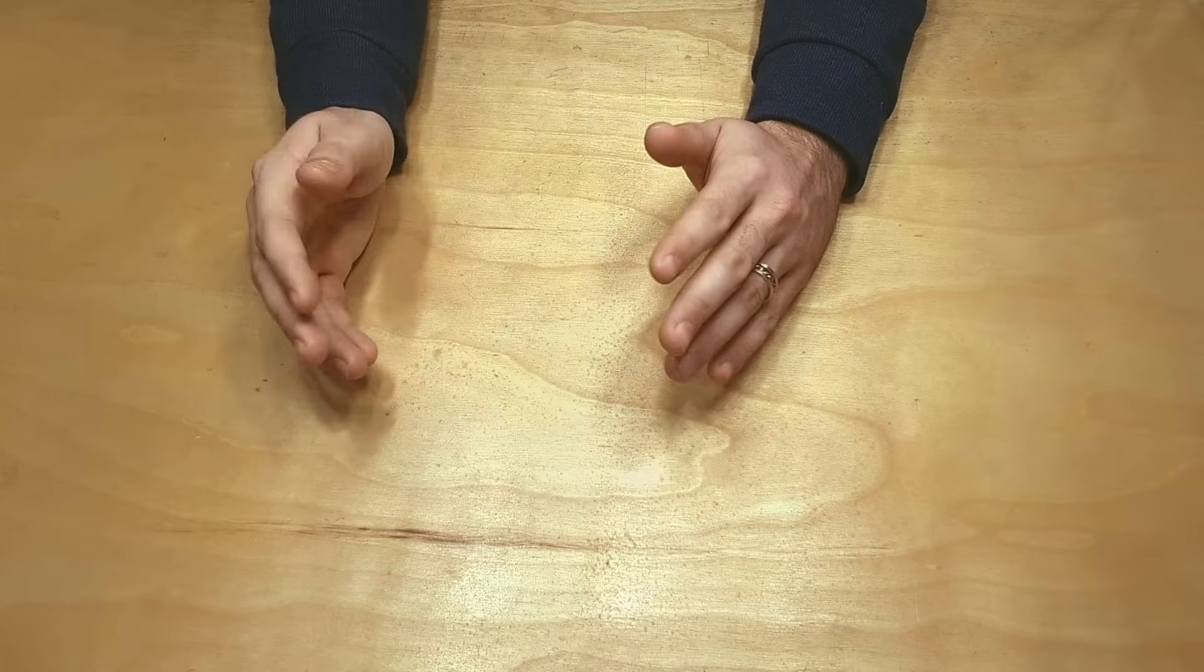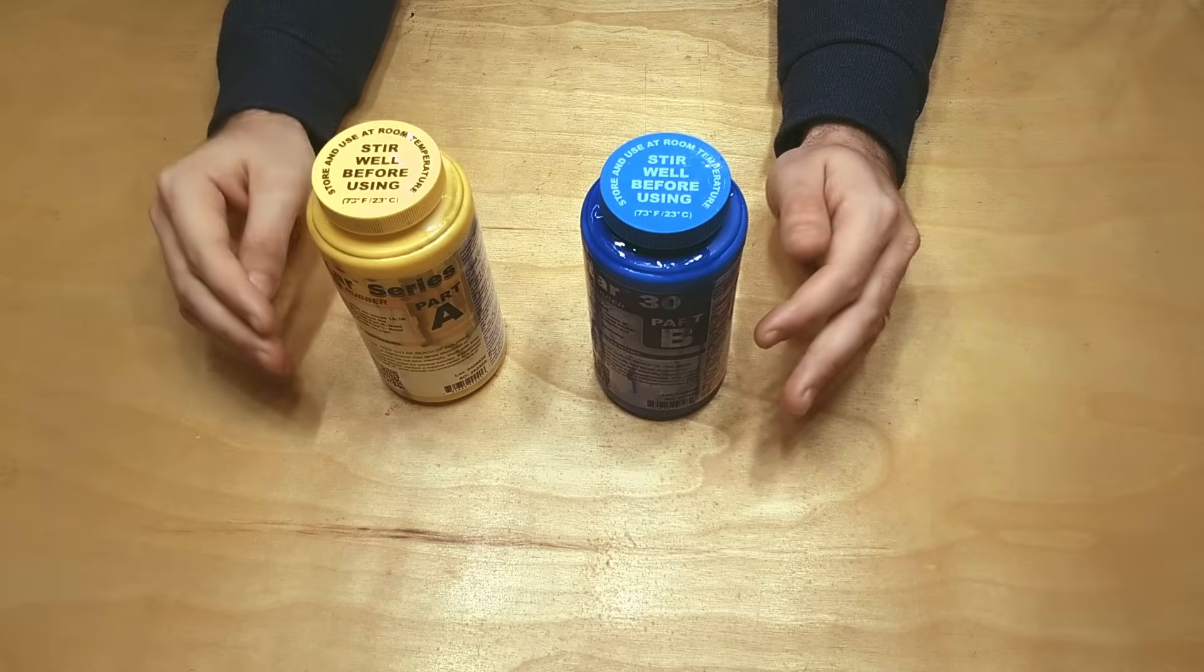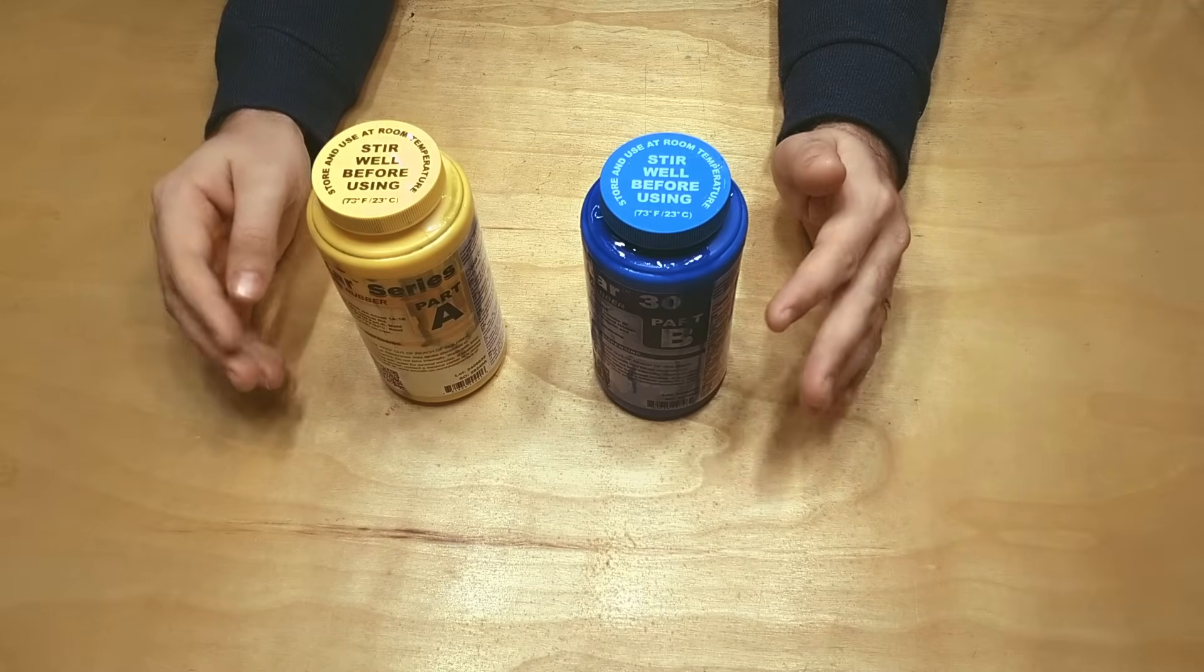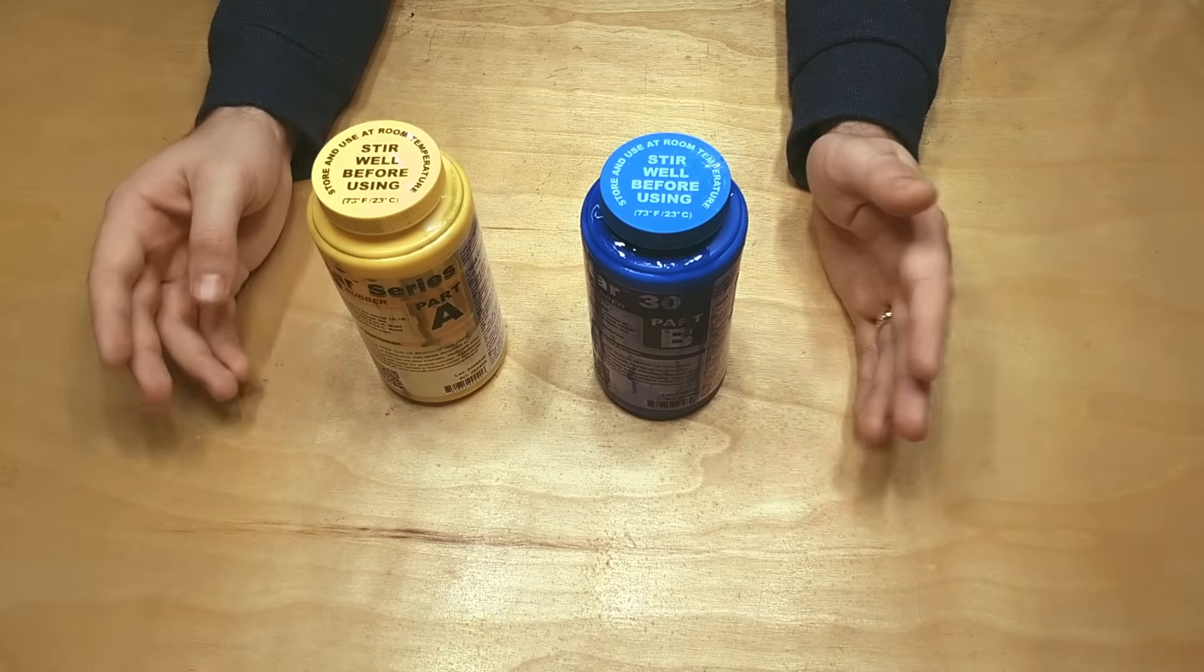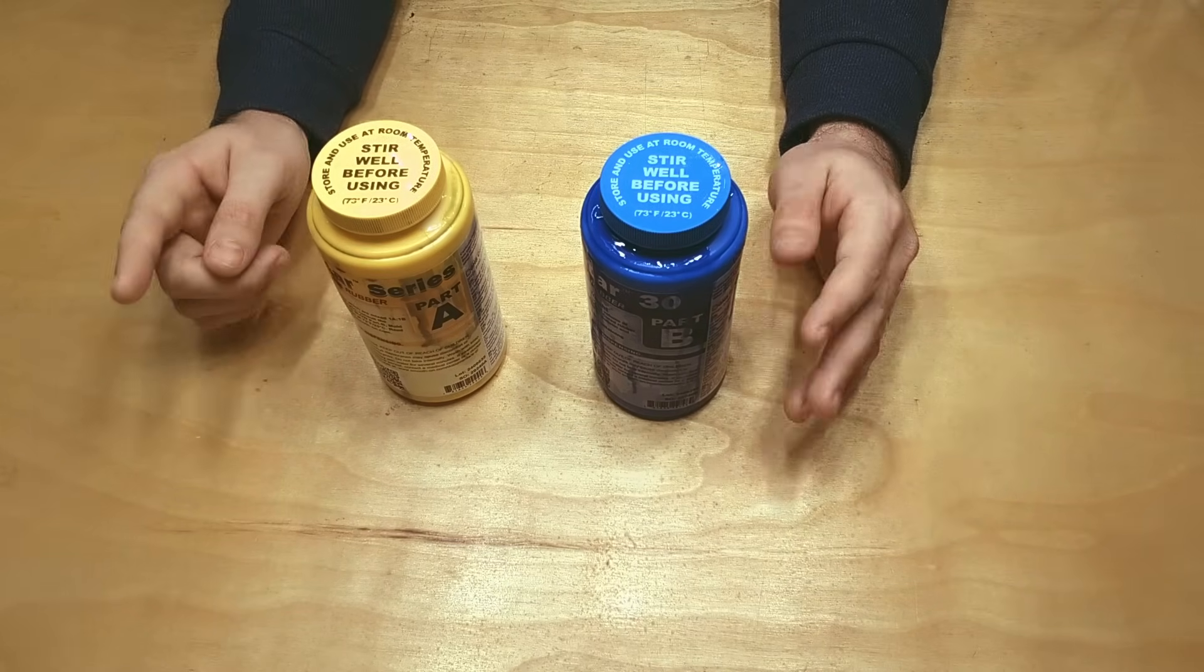The silicone I'll be using is this Mold Star 30, which has a density of 1.12 grams per cubic centimeter. So whatever I use needs to be denser than that.